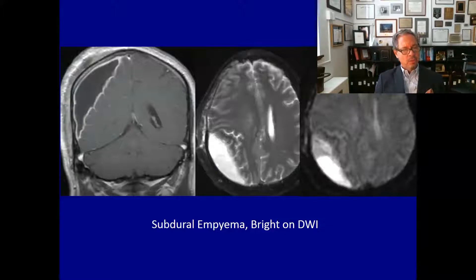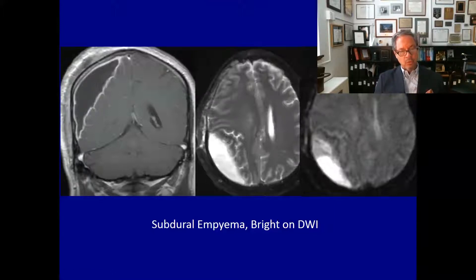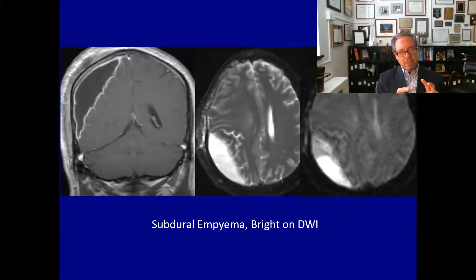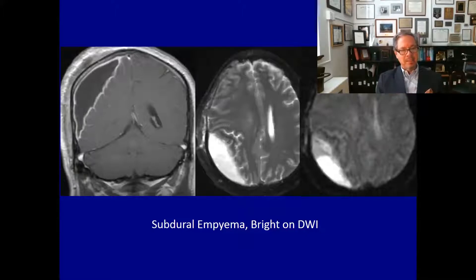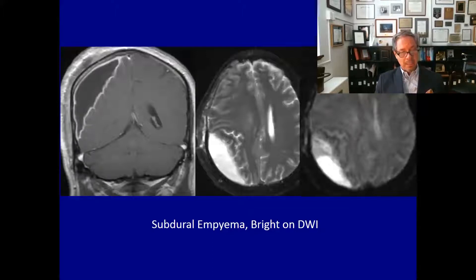Here is another fluid collection. On the T1-weighted post-gadolinium image there is enhancement of the peripheral and medial aspect of the collection. It is bright on T2-weighted images, but it is very bright on diffusion weighted images and very dark on the ADC map, indicating restriction of fluid motion, which is commonly seen with pus. Pus is a very complex environment with many cells, debris, and bacteria that have water receptors on their surface, binding water and preventing free movement. Therefore, restricted diffusion in a ring-enhancing lesion or subdural collection in a patient with infection generally indicates accumulation of pus.